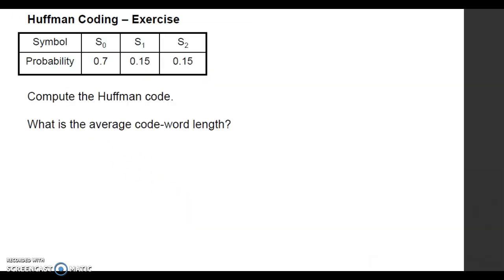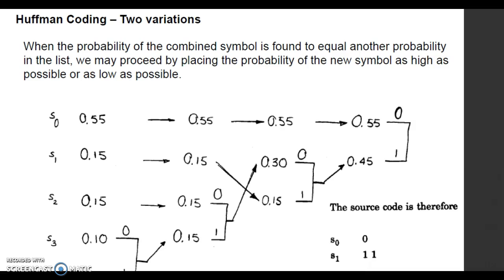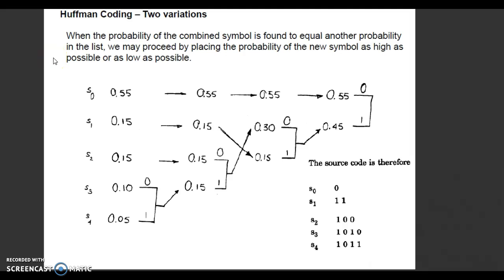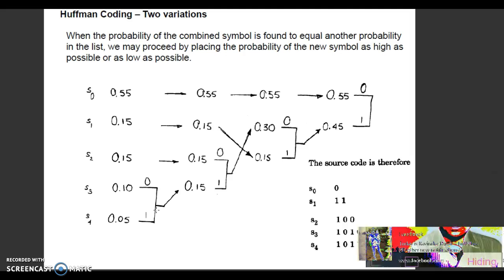Now let us consider another problem. We have two different methods to solve the problem based on Huffman coding. The first method is the highest probability method and the second method is the lowest probability method. Once again, consider five symbols with five different probabilities. In step number one, arrange the symbols and corresponding values of probabilities in decreasing order, then add the last two values of probabilities. We have to place the added value of probability in the next column using either the highest probability method or the lowest probability method.